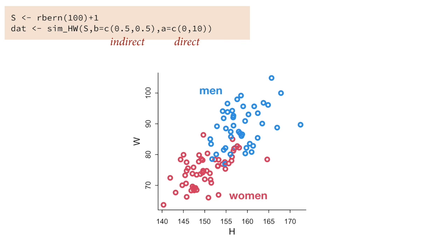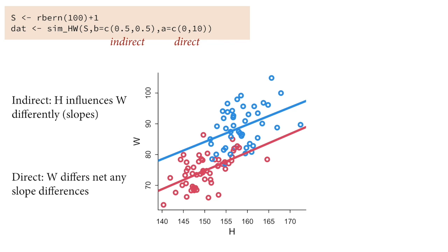Here's a simulation where I make the slopes the same — the causal effect of height on weight is the same for men and women — but the direct effects differ: men are on average 10 kilograms heavier regardless of their height. Simulating a sample and plotting it, you can see the difference: height influences weight the same way for both sexes, but men are heavier on average. If we fit regression lines independently for men and women, they have the same slope, but the blue (male) points are still higher — they're 10 kg heavier than expected for their height. That's what we mean by a direct effect.